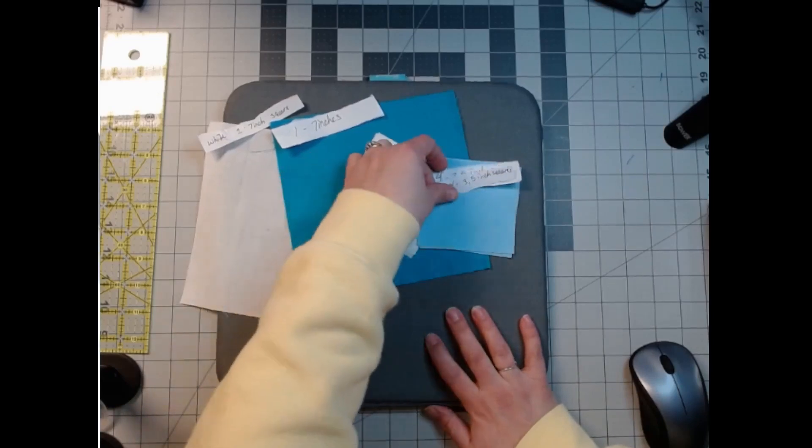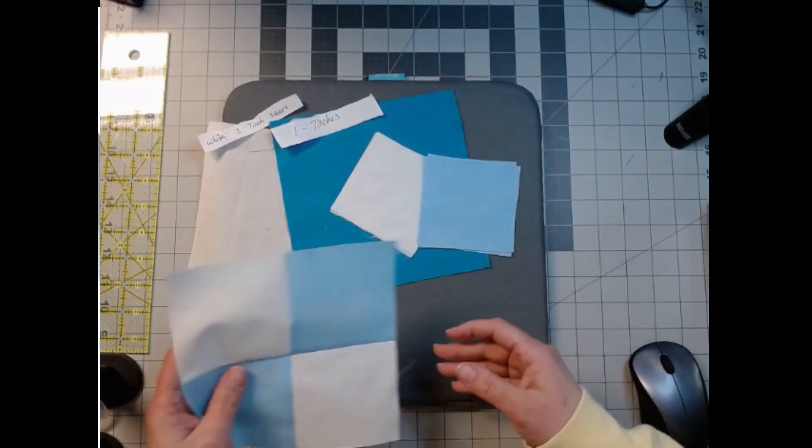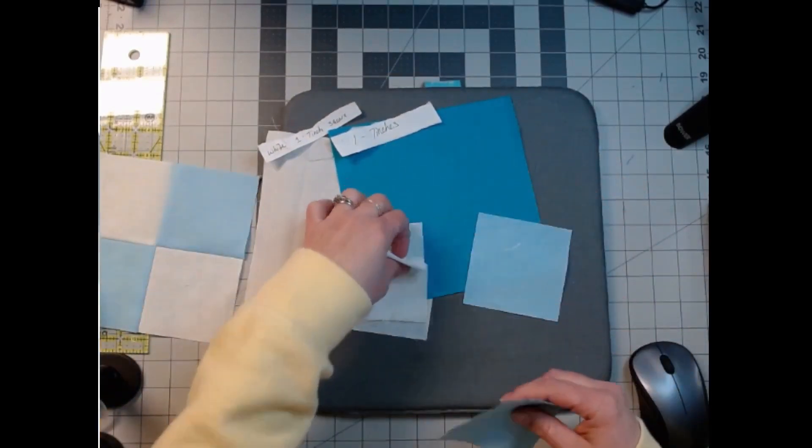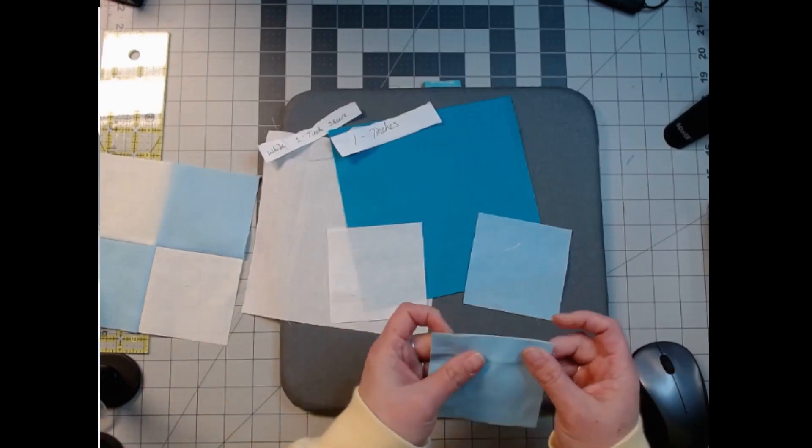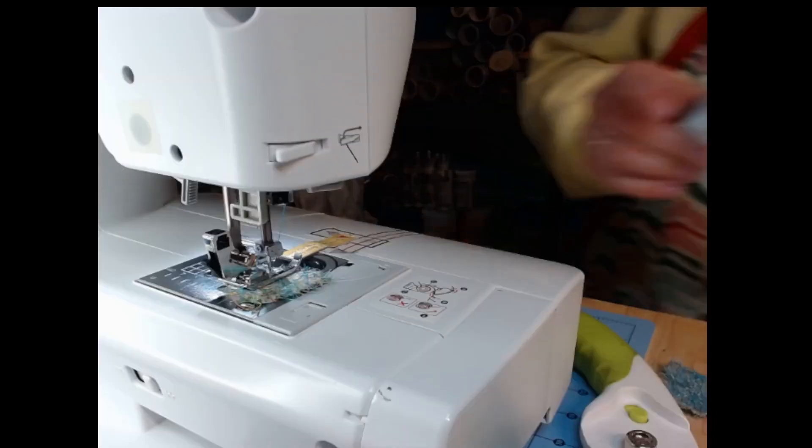For starters, we're going to turn these into this four-patch. Pretty easy, we're going to start there. We're just going to match opposite ones up. I'm not going to pin them, I'm just going to take it over there, and then I'll grab this one while we're over there.